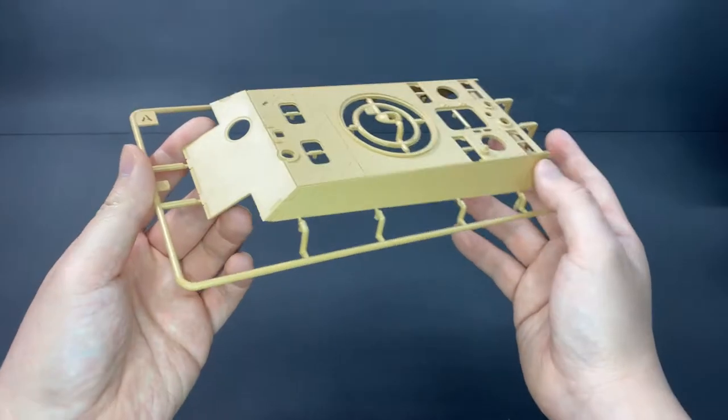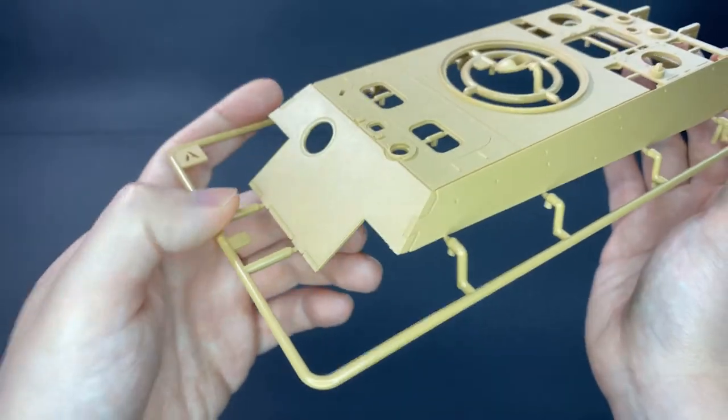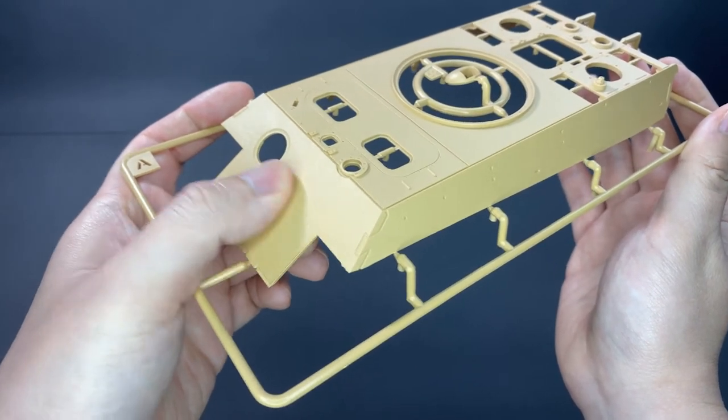Starting off with sprue A, this is the main hull. Not sure if you can see it but the surface is actually fully textured, giving that realistic cast iron appearance, very nice.